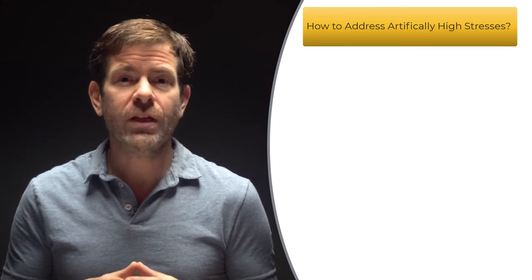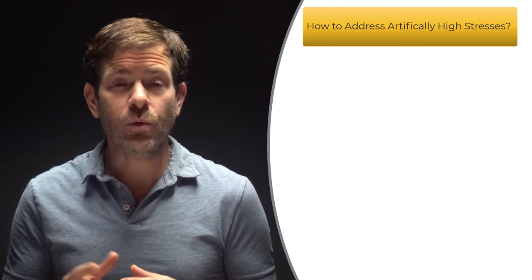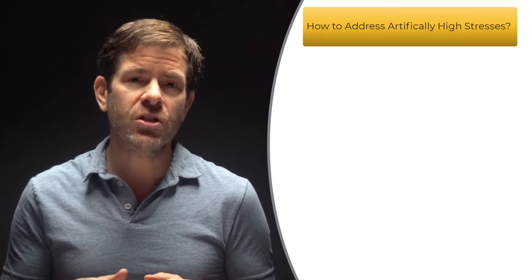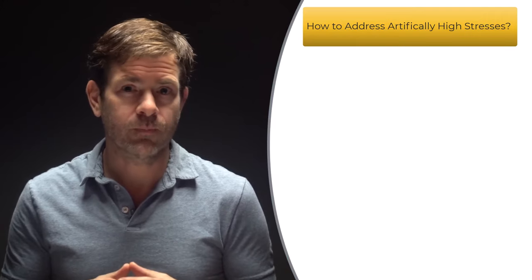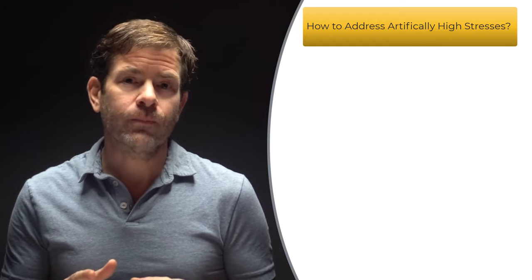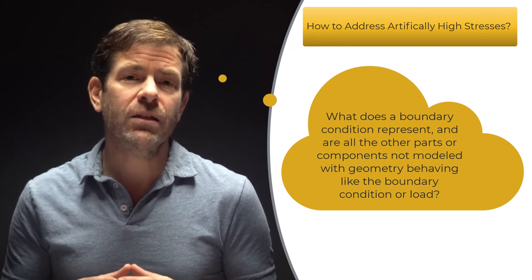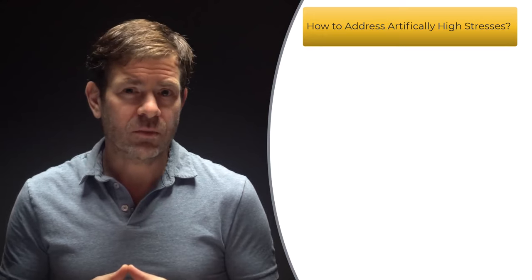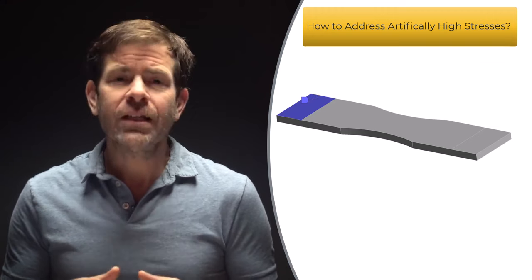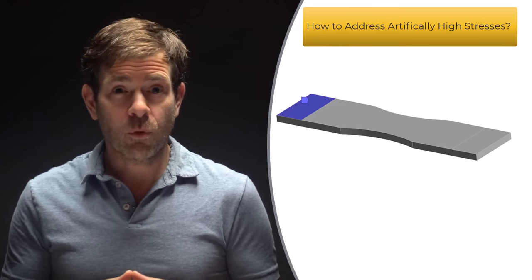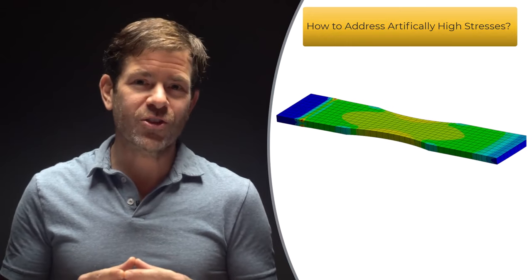The last case we'll discuss is the artificially high stress we see with improper boundary conditions. It's important to specify boundary conditions that accurately represent the model's interaction with the rest of the world. A common mistake is assuming all parts interacting with our geometry can always be represented with a boundary condition. Instead, we should ask: what does a boundary condition represent, and are all the other parts behaving like that boundary condition? For example, take a dog bone tensile test specimen. It's convenient to specify a fixed support where the grips hold the specimen, but the grips are not welded to the specimen. By using a fixed support, we are restricting straining in the lateral and thickness direction from the Poisson's effect, giving rise to artificially high stresses near the boundary condition.